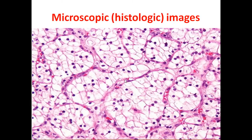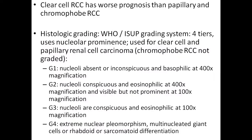Under the microscope we can see the tumor has the architecture of a nested or alveolar type of pattern. Inside it, the cancer cells have a nucleus in the center while the cytoplasm around the whole cell is cleared out. This is the reason it is called clear cell renal cell carcinoma — all the lipid inside the cancer cells has been wiped out by histological processing, so it is an artifact.